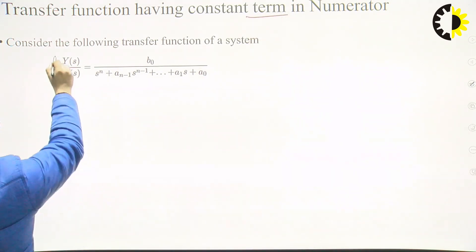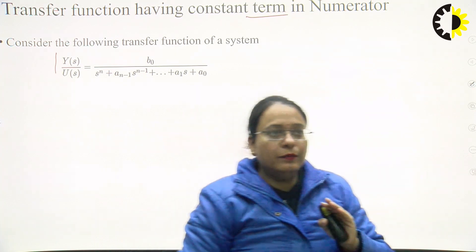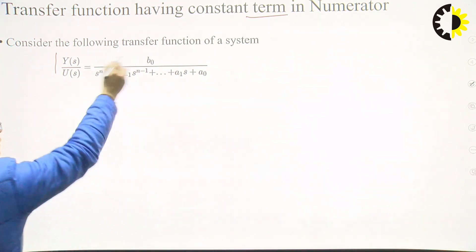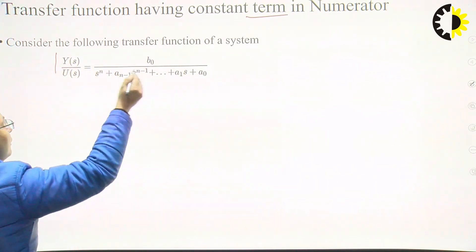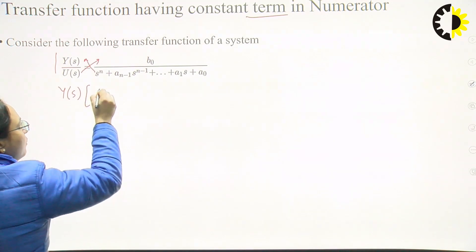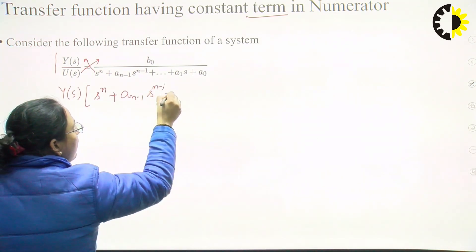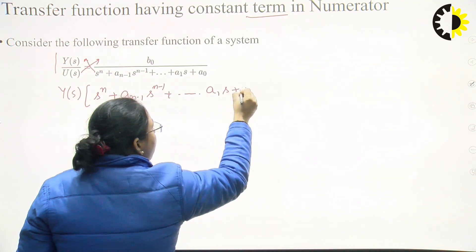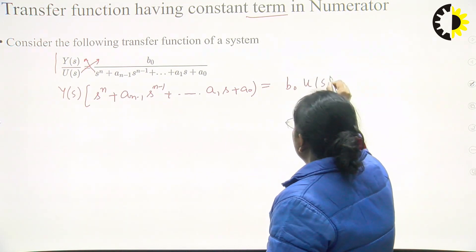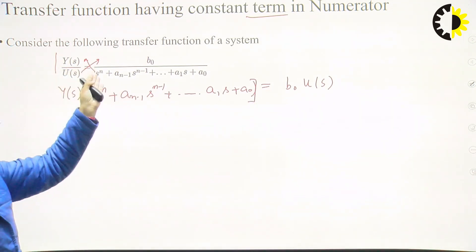Let us consider a transfer function where we have only a constant term b0 in the numerator. Now, how do we get the state space model from this transfer function? I can rearrange this transfer function and write it as Y(s) into [s^n + a_{n-1} s^{n-1} + ... + a1·s + a0] equals b0 times U(s). What I am doing here is cross-multiplying these two terms.